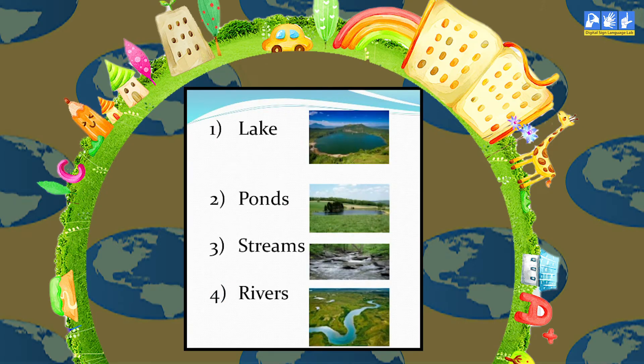Next is river. A water body flowing through a narrow path is called a river. So there are different types of water bodies. These are the different types of rivers. They are natural.